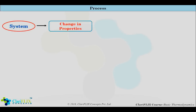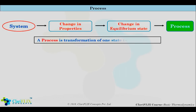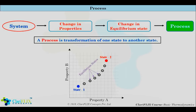Now let us understand what is a process and how it takes place. When any property of a system changes, the equilibrium state changes, and the system is said to have undergone a process. In other words, a process is the transformation from one state to another state. Consider a graph having property A on the x-axis and property B on the y-axis, with state 1 marked. As the process occurs, the system reaches state 2, passing through many equilibrium points. The series of equilibrium points gives the path of the process.